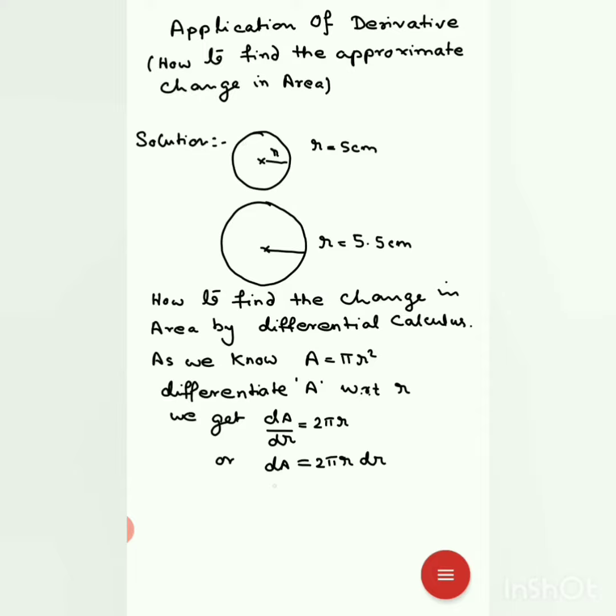Now, let us substitute the value of r and dR. r is the initial radius, that is 5 cm. And dR is the change in radius. Here it is 5.5 minus 5, which is 0.5 cm. Now, when I substitute, I get dA, which is equal to 2π times 5 times 0.5.